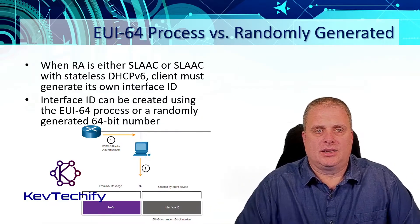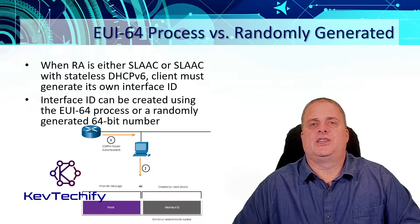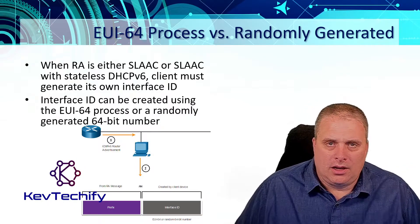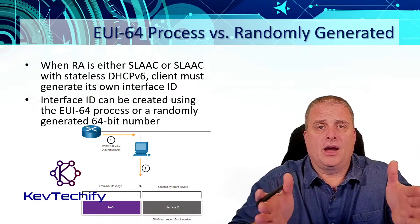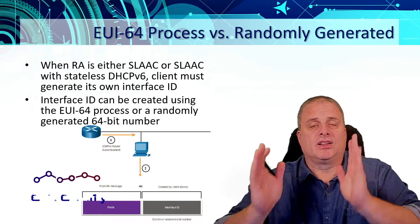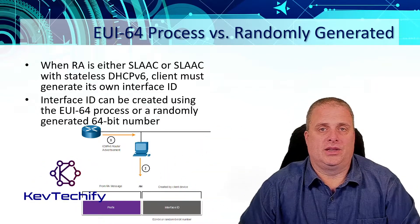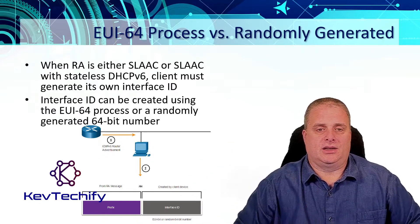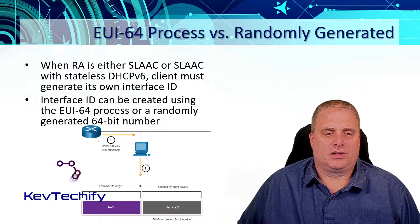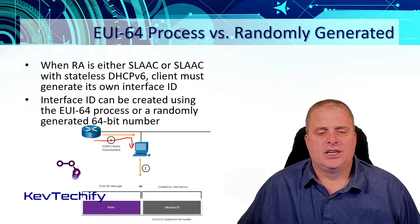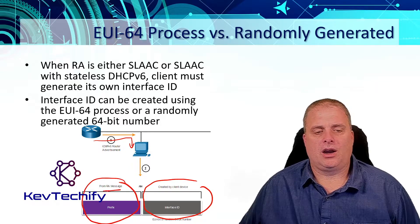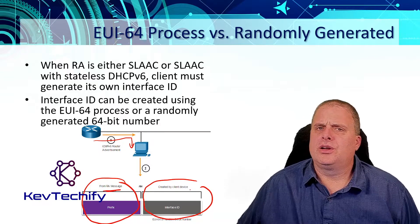With SLAAC and SLAAC with a stateless DHCPv6 server, the client must generate its own interface ID. The prefix — the network portion — is typically 64 bits of your 128-bit IPv6 address, so the client needs to generate its last 64 bits. The router advertisement says: use SLAAC, generate your own ID. It gives you your prefix from the RA message, but you generate your own client interface ID. There are typically two processes for this.